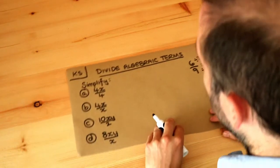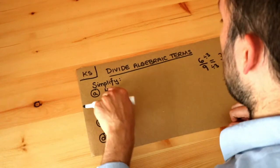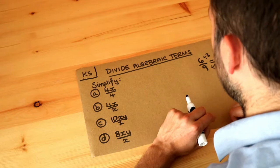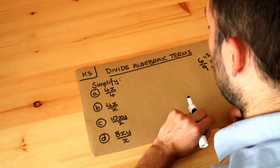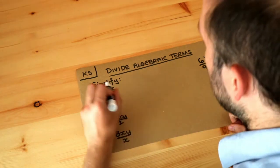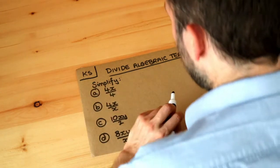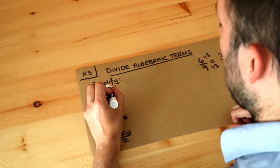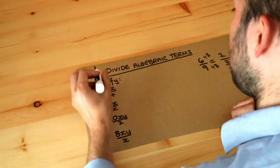The same applies in algebra. We can divide top and bottom by whatever we like, as long as it's the same. Can you see we could divide the top and the bottom by four? They have a four in common.